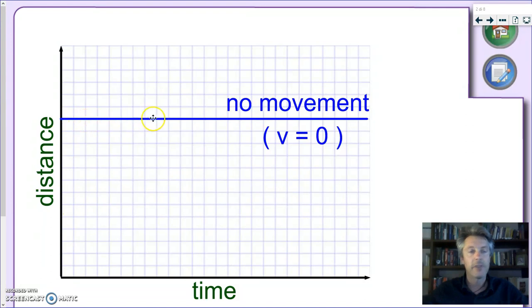And what we have here, every second, every minute, every hour, depends what is your scale, you will see that the distance does not change. So, a distance-time graph for an object which is not moving at a speed of zero, as we say, it's a flat line parallel to the x axis.